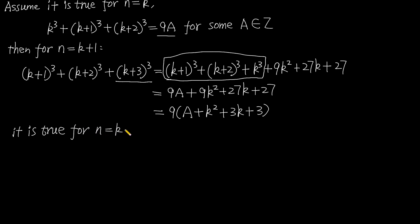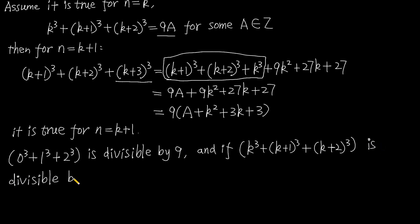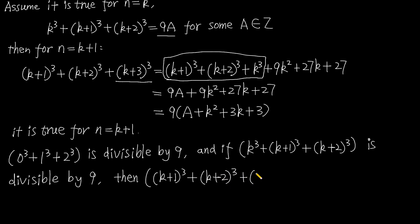Conclusion: 0³ + 1³ + 2³ is divisible by 9. And if k³ + (k+1)³ + (k+2)³ is divisible by 9, then (k+1)³ + (k+2)³ + (k+3)³ is also divisible by 9. Therefore, the sum of the cubes of any three consecutive integers is divisible by 9.